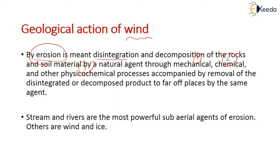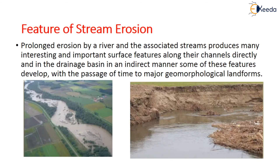Streams and rivers are known as sub-aerial agents of erosion. Coming to features of stream erosion — prolonged erosion by a river and its associated streams produces many important surface features along the channel and in the drainage basin. These features develop over time into major geomorphological landforms formed due to prolonged erosion of the river.